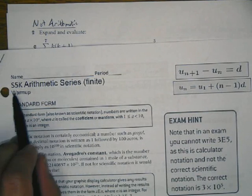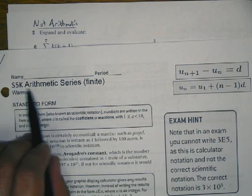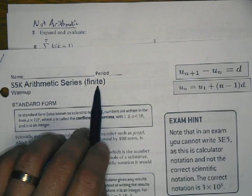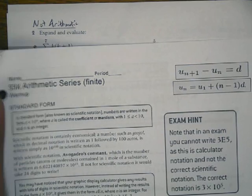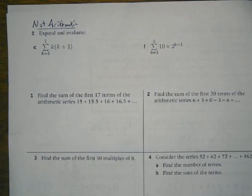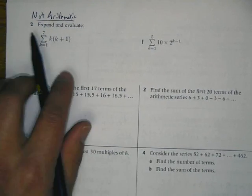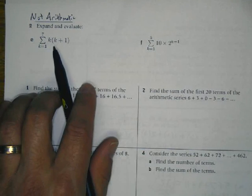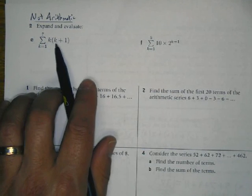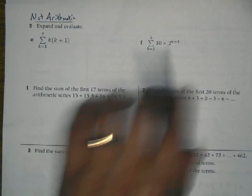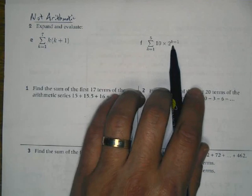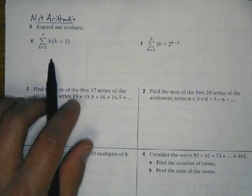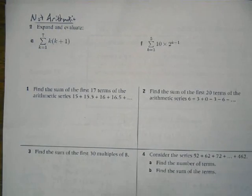We're going to continue with our S5K arithmetic series solutions in part two of the video. Here we've got questions 2E and 2F, and notice this is not an arithmetic sequence because I have K squared here and K in the power. It's not going to be an arithmetic sequence, so in order to find the sum, we're going to find out each term.